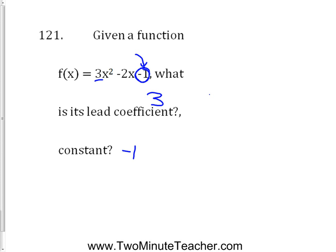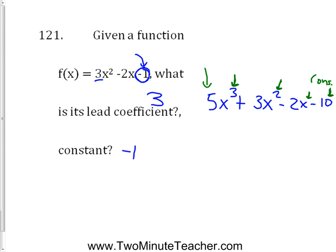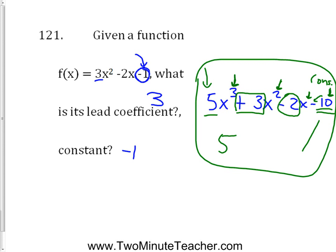Let's talk about these a little more. If I had 5x³ + 3x² − 2x − 10, the lead coefficient is the one in front, as long as you've written it in order from the biggest degree to the smallest. This one has degree 3, degree 2, degree 1, and degree 0. The degree 0 term is also known as the constant. So the lead coefficient is 5, and the constant is negative 10. Remember to include the sign in front of it.